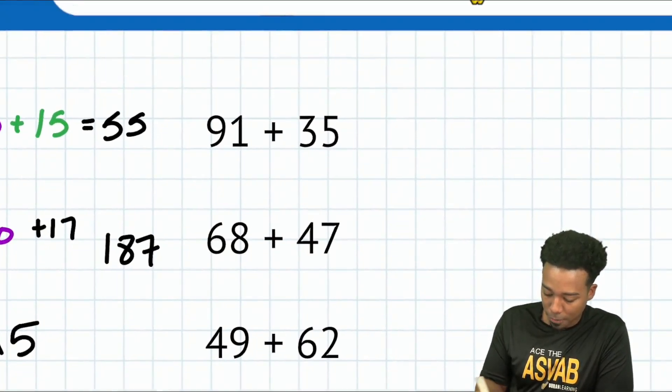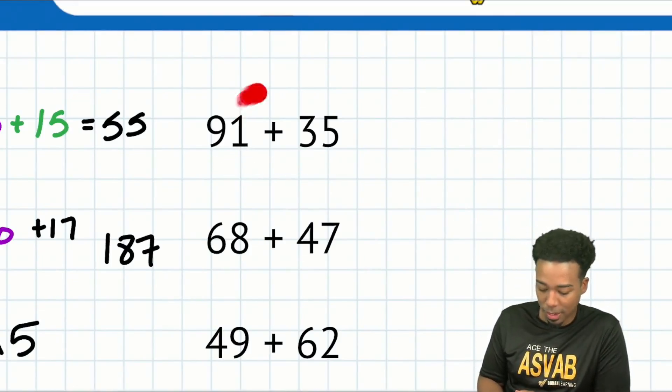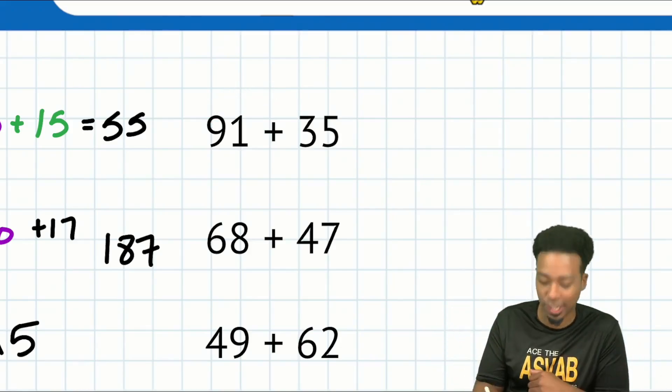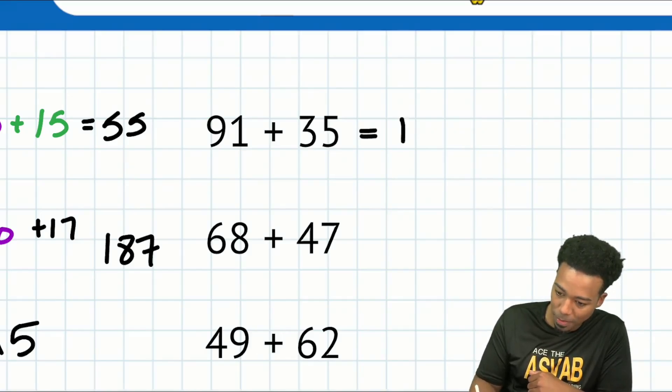So next up, 91 plus 35. Well, here 1 plus 5 is going to be 6. 90 plus 30 is 120. So 126. Nice and easy.